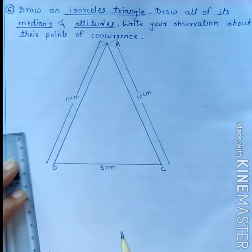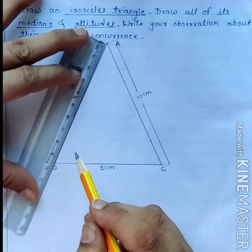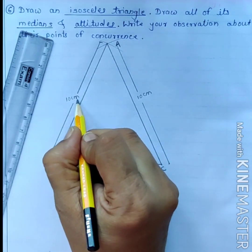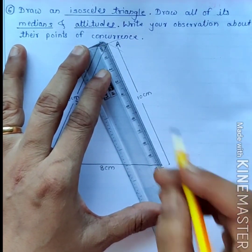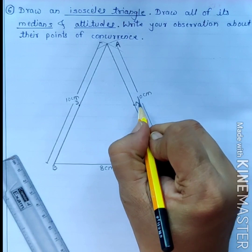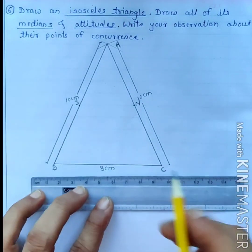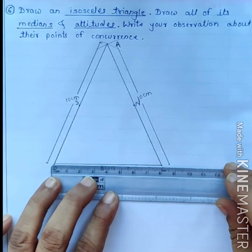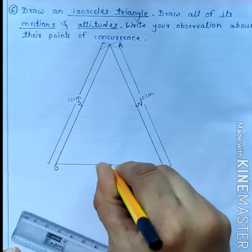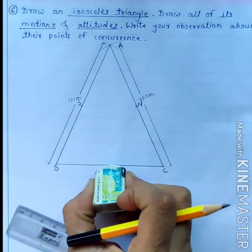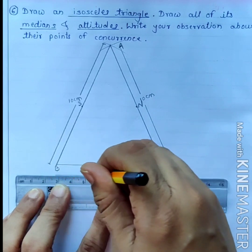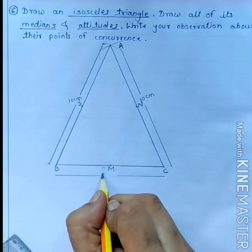Now we have to show the medians. Since the length of side AB is 10 cm, we mark the midpoint at 5 cm and name it S. Since side AC is also 10 cm, we mark its midpoint at 5 cm and name it N. The base BC has a length of 8 cm, so its midpoint is at 4 cm, and we name that point M.